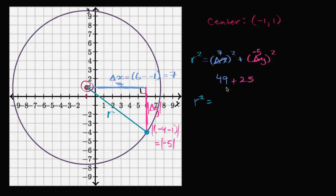So what's 49 plus 25? That's going to be 74. R squared is equal to 74.